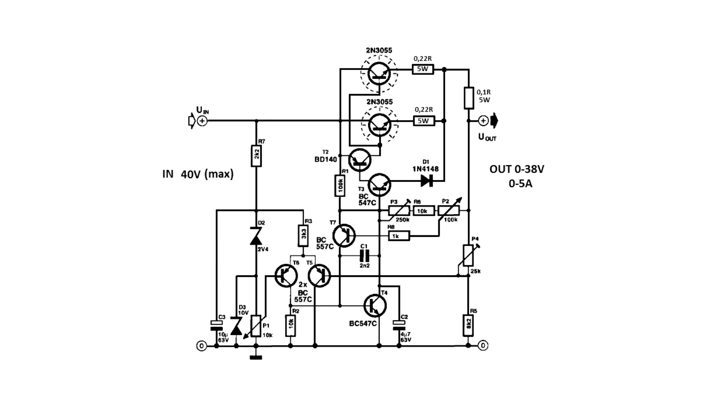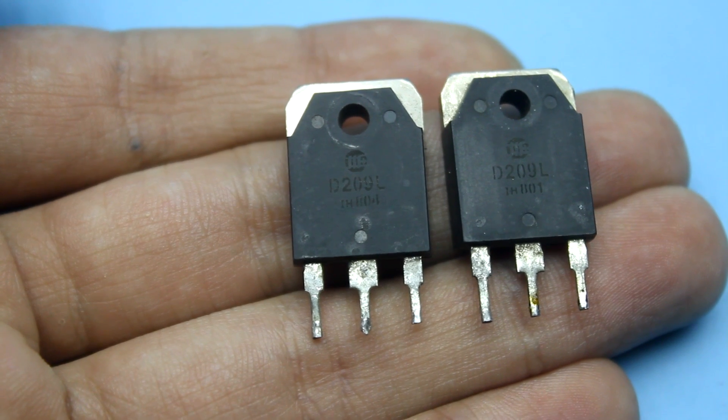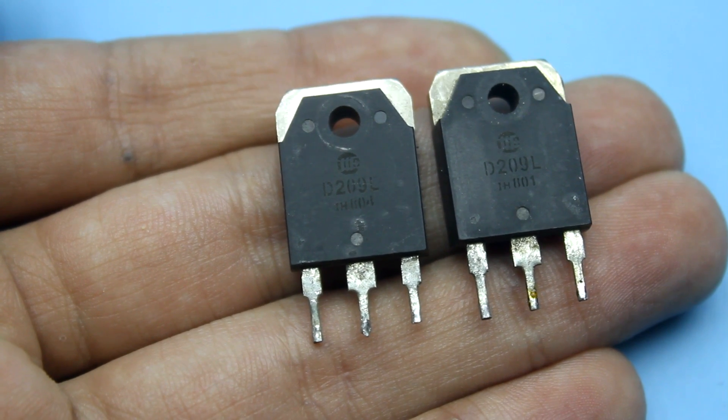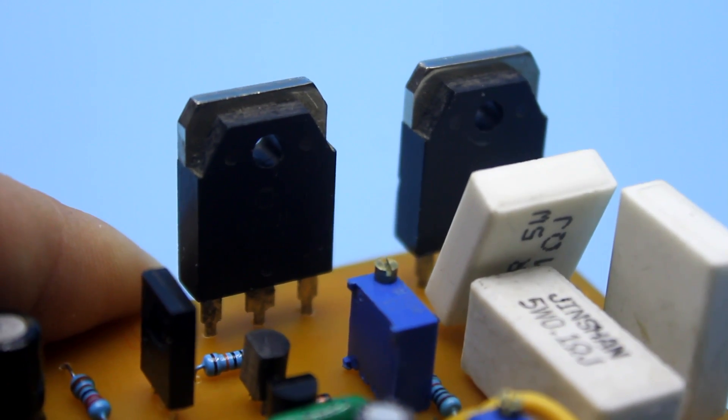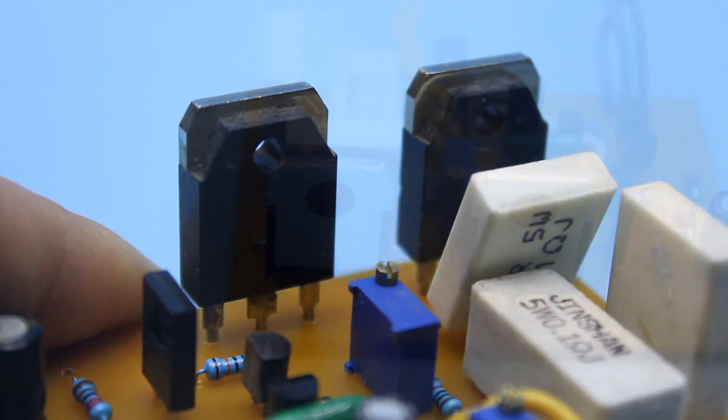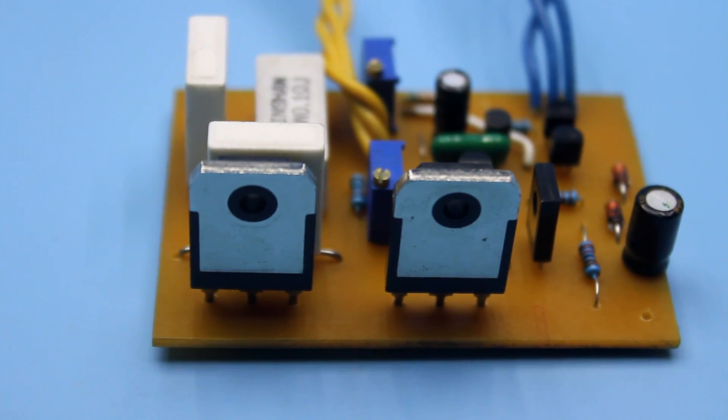At first, as power transistors, I used 2SD209. In fact, it is an analog of the transistor MJE13009. Both options are very often used in computer power supplies.